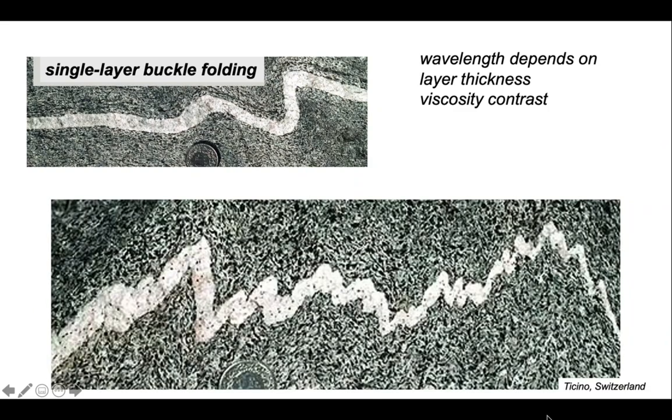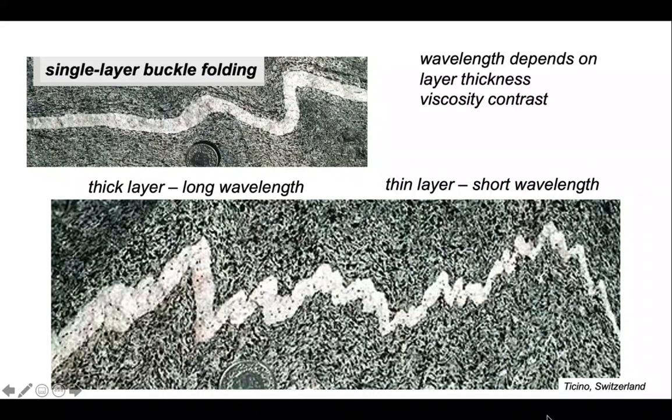And we can see this empirically on this rather nice deformed aplite vein in the Swiss Alps, where the layer thickness varies from left to right in the view, and so too does the wavelength of the folds. Thick layer long wavelength, thin layer short wavelength. So this is a qualitative demonstration of the Biot-Ramburg relationship.